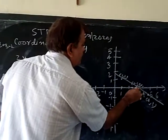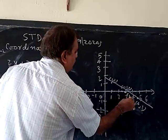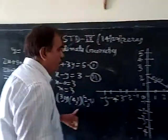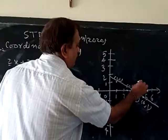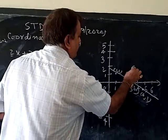Where is (3, 0)? This is (3, 0). Next coordinate is (4, 1). This is the point, (4, 1).